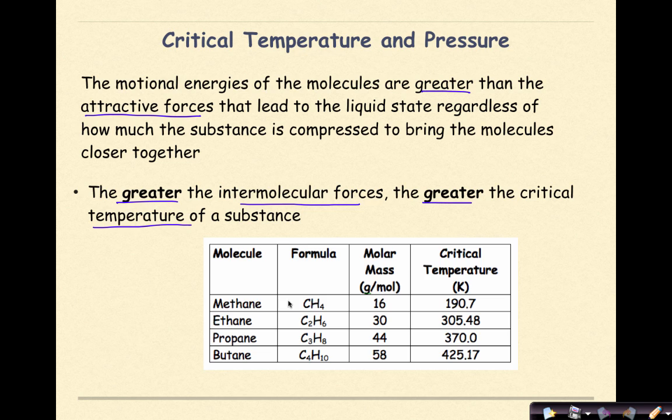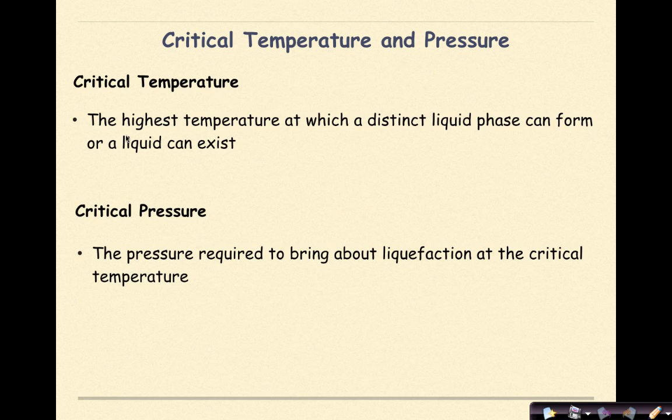the critical temperature also increases. So while methane might have a critical temperature of 190.7, butane has a critical temperature of 425.17. So we can see this relationship between critical temperature and intermolecular forces. Critical temperature is defined as the highest temperature at which a distinct liquid phase can form or a liquid can exist.